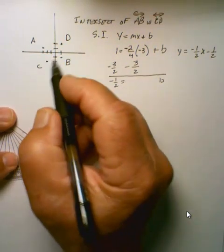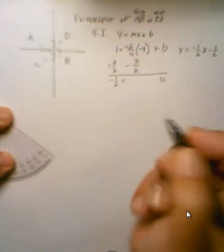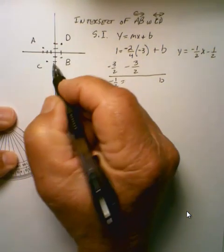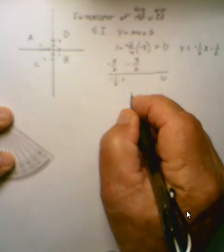Then we're going to do the same thing for CD. The run from C is 1, 2, 3. And this rises from negative 2, it goes 1, 2, 3, 4, so it's a rise.